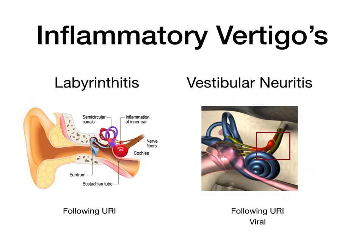Labyrinthitis typically occurs following an upper respiratory infection. Because of the eustachian tube's connection between the inner ear and the pharyngeal area, viral or bacterial illness from the sinuses, pharynx, or larynx can extend into the inner ear and inflame the labyrinth. This causes vertigo because inflammation disrupts the normal fluid flowing through the semicircular canals, putting excess pressure on those tiny hairs.